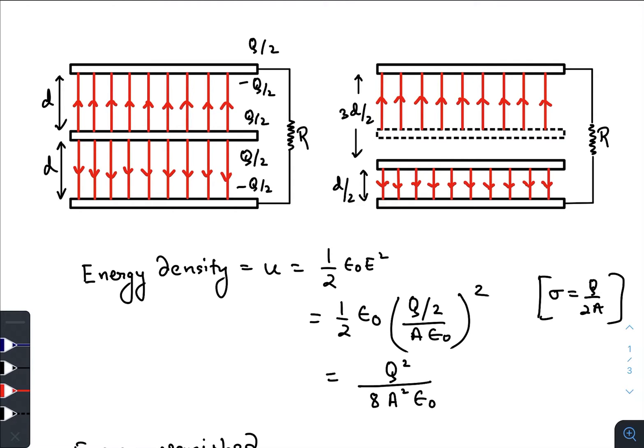Now, what we are doing in the question they have said that the middle plate is suddenly or quickly shifted to any one of the outer slabs by an amount D by 2. This gap is D by 2.